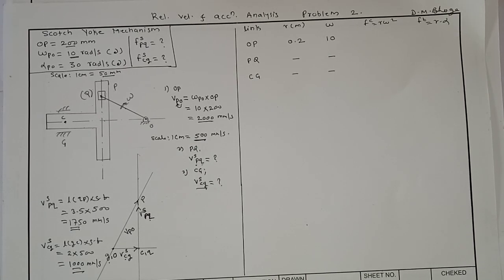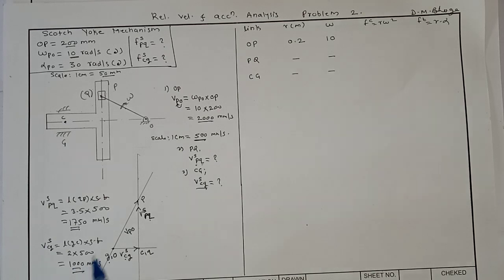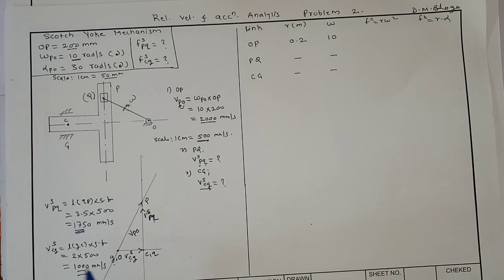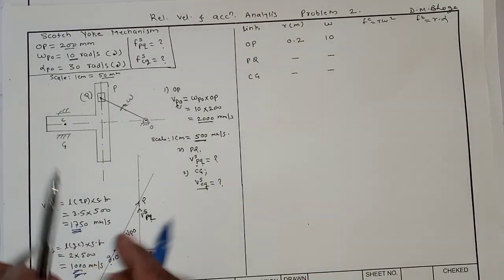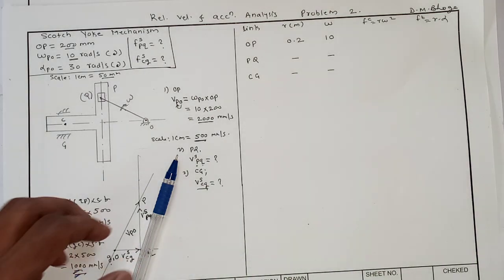Welcome back to the problem on the Scotch-yoke mechanism. In the last lecture we drew the velocity polygon for the given mechanism and determined the unknown velocities: velocity of slider P is 1750 millimeters per second and velocity of slider C (the slotted link) is 1000 millimeters per second. Now let us draw the acceleration polygon for the given mechanism.